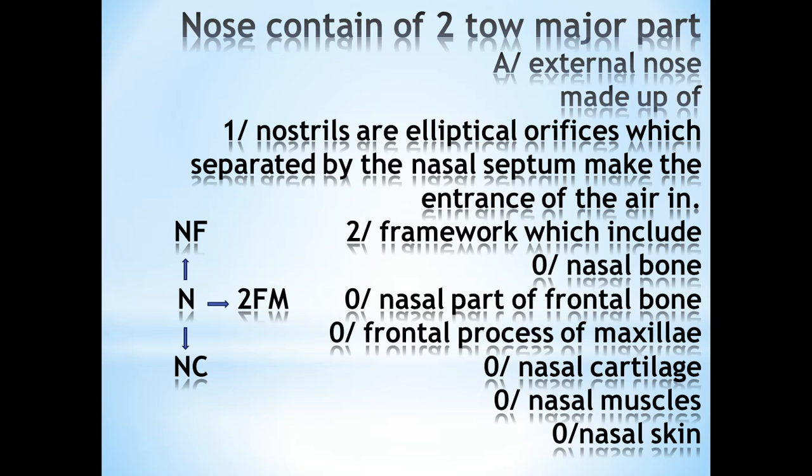The nostrils are a zone. The nostrils have front hairs, and the two sides are separated. The nostrils are divided into left and right, making the entrance for air. The most important thing is that the air contains water vapor.